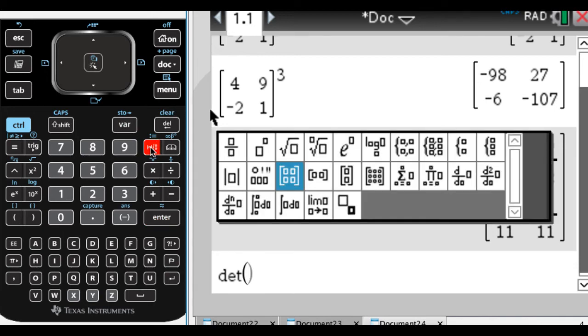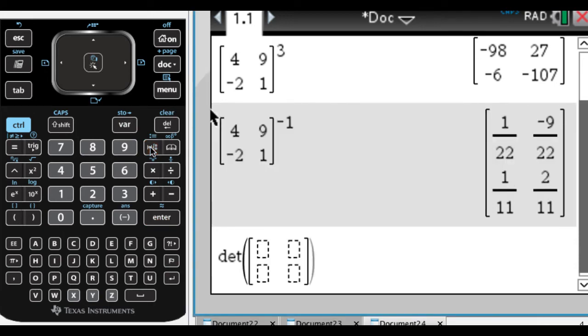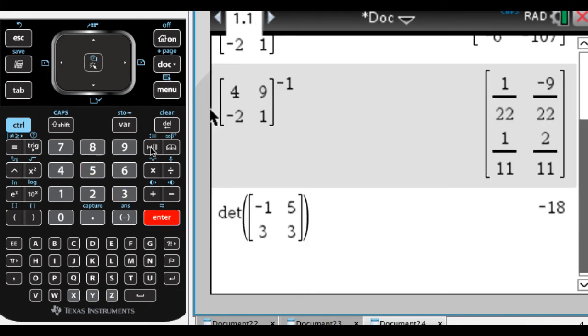Again, this needs to be a square matrix, so I'm going to go with a 2 by 2: -1, 5, 3, and 3. The determinant of that matrix is -18.